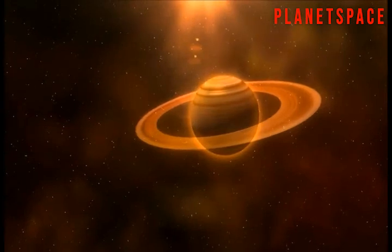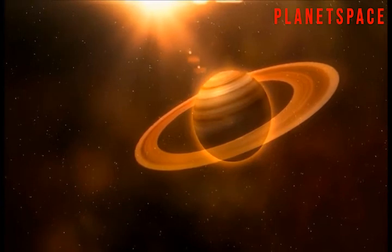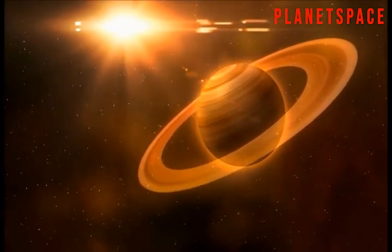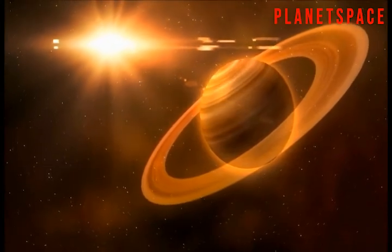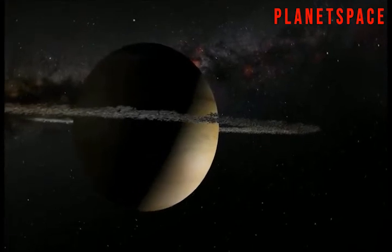After Jupiter comes Saturn, another gas giant. Saturn is famous for its beautiful rings. Although they look solid from a distance, the rings are actually made from many, many small ice particles, as well as rocks and dust.